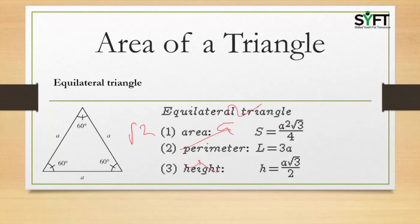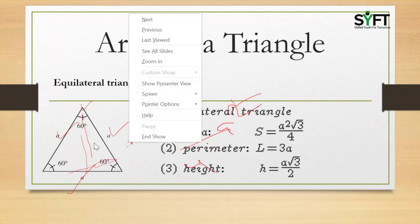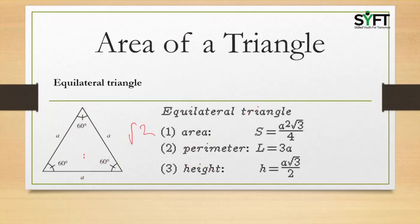The perimeter of an equilateral triangle is the sum of all three sides: A plus A plus A, which equals 3A. The height equals (root 3 by 2) times A. This is derived by drawing a perpendicular from the vertex to the base, dividing the base into two parts of A by 2. By Pythagoras theorem: A squared equals (A/2) squared plus height squared, so height squared equals A squared minus (A/2) squared, giving height H equal to (root 3 by 2) times A.